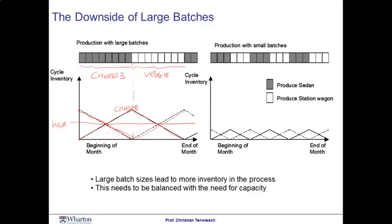Now, consider an alternative: consider a frequent changeover from making cheeseburgers to making veggies, to cheeseburgers, to veggies. It doesn't necessarily have to be a batch size of one, but you notice the batches are much smaller here in the restaurant on the right. Notice how the smaller batches are leading to less inventory in the process. In the extreme case, we would be switching between cheeseburger, veggie, cheeseburger, veggie one by one. This is what's called mixed model production.